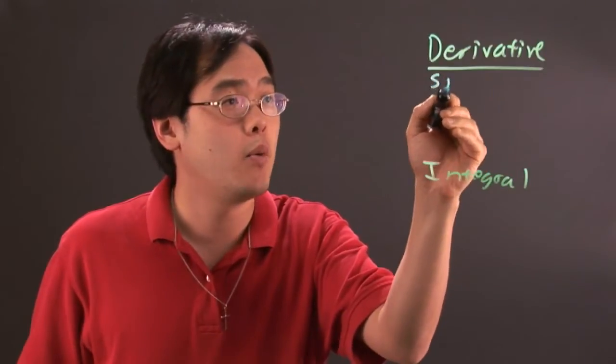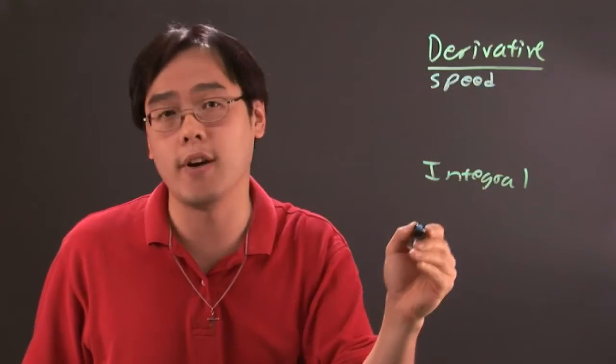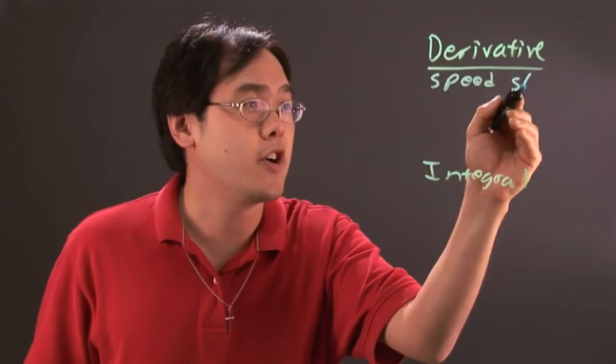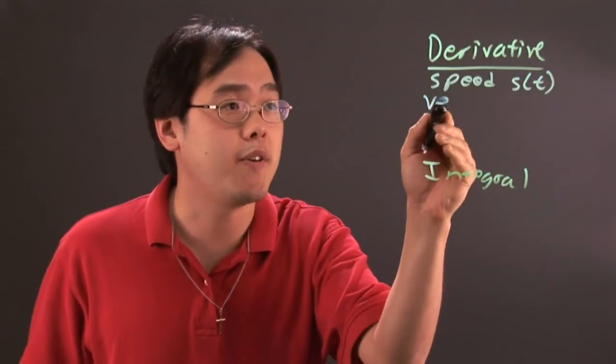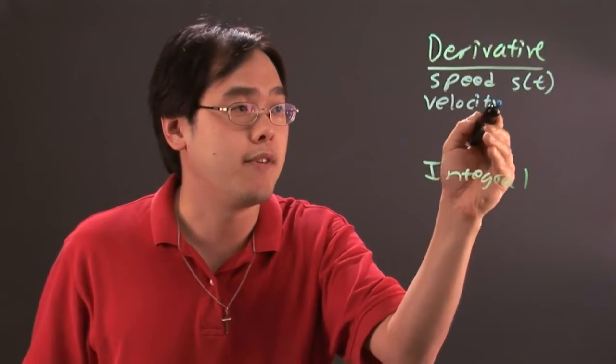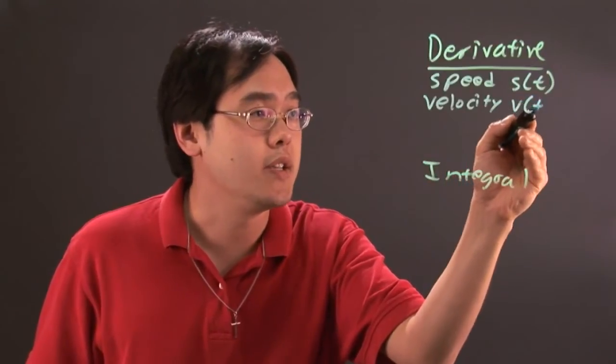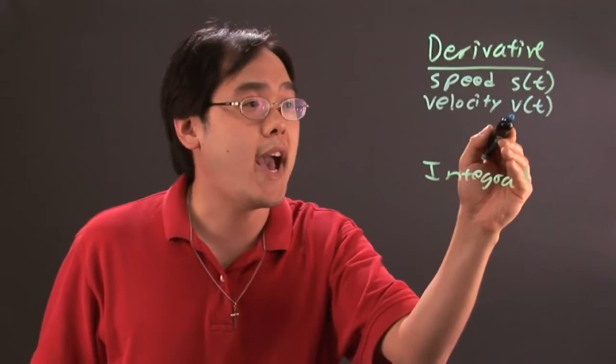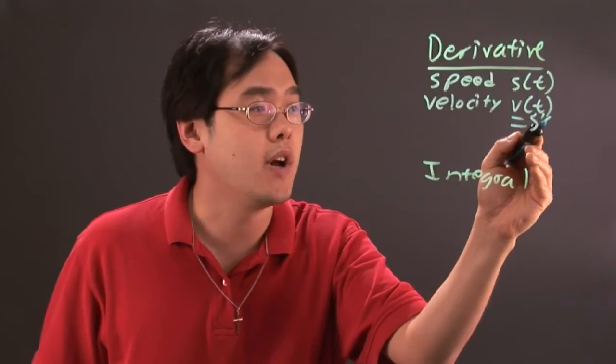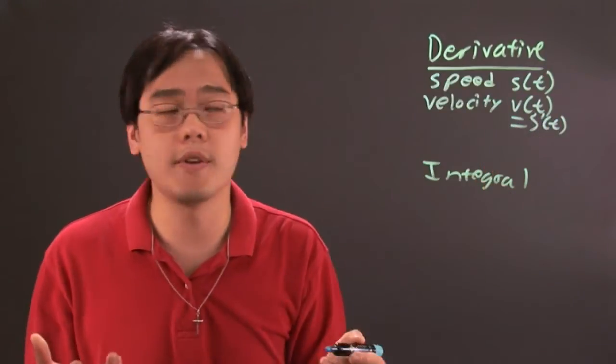For example, one application is the speed function. The speed function is given as s. They may ask you to find the velocity of that function. The velocity is known as v, but it's actually the derivative of the speed function. That's where the derivative comes in.